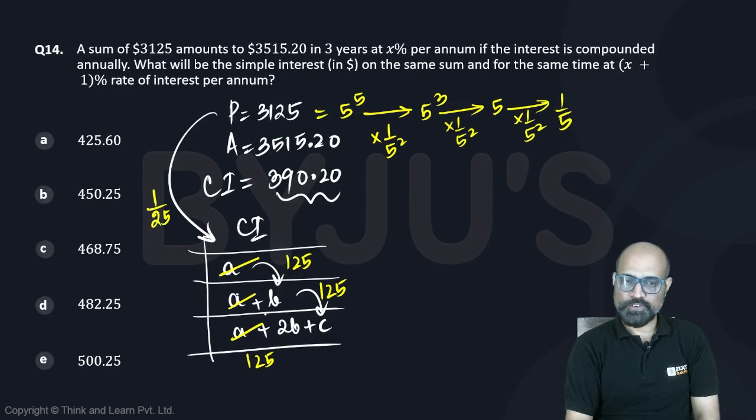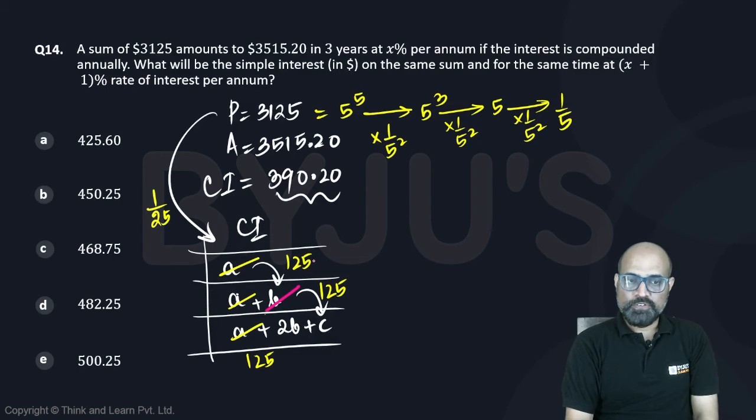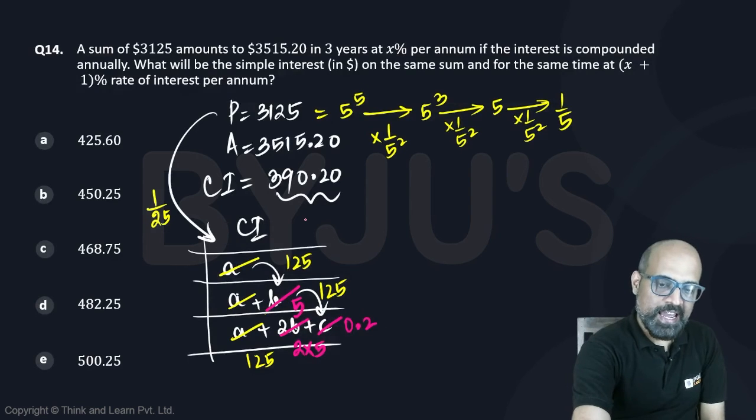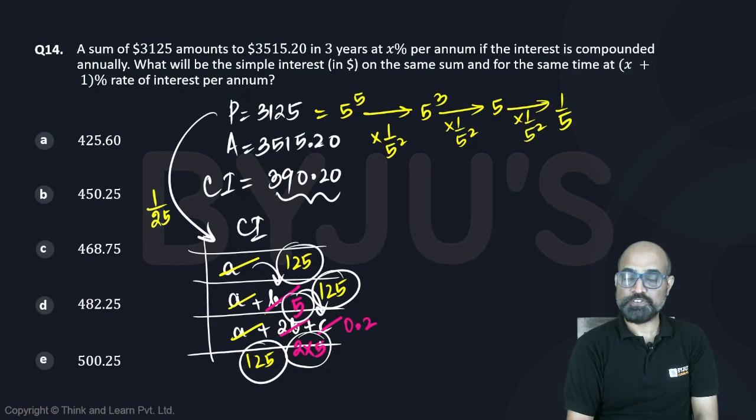1 by 25 which is 4 percent of P, 125 will give us 125, 125, 125, and then 1 by 25 of 125 is going to be 5. So this is going to be 2 into 5 and this is going to be 1 by 5 which is 0.2. If we add these: 125, 125, 125 is 375, 375 plus 15 is 390, 390.2. So we just got our rate of interest which is 4 percent.